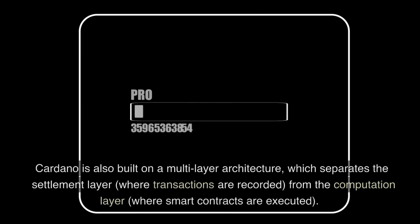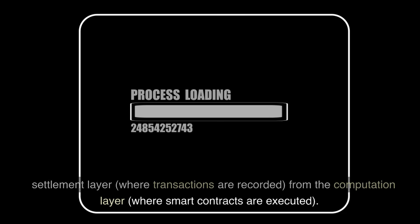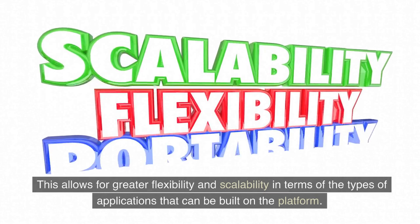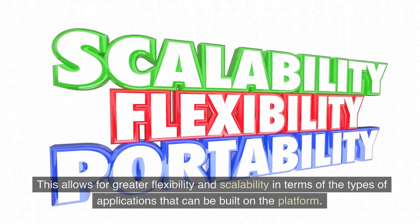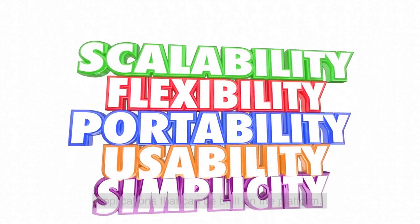Cardano is also built on a multi-layer architecture, which separates the settlement layer, where transactions are recorded, from the computation layer, where smart contracts are executed. This allows for greater flexibility and scalability in terms of the types of applications that can be built on the platform.